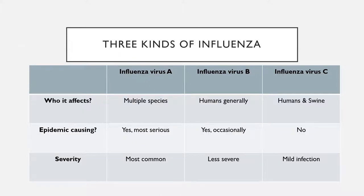Type A is the most common of the influenza virus. It causes the most serious epidemics and it infects multiple species. Type B is less severe and generally only infects humans; this type can sometimes cause epidemics. Type C is a milder form — it infects humans and swine and is not known to be connected to causing epidemics.